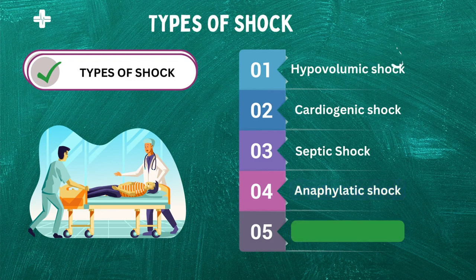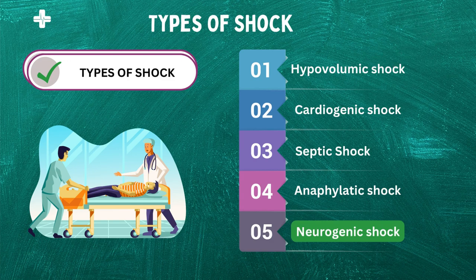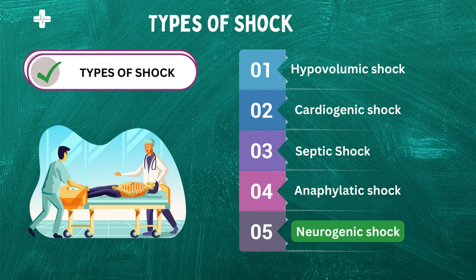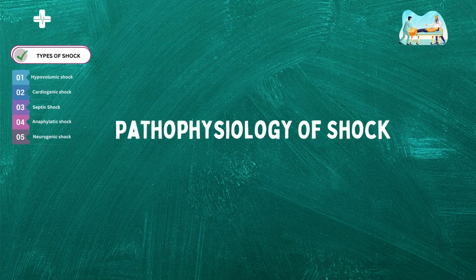Lastly, neurogenic shock. This type of shock occurs when there is damage to the nervous system, such as a spinal cord injury or severe head trauma. The damage to the nervous system can cause blood vessels to dilate, leading to a decrease in blood pressure and inadequate blood flow to the body's organs and tissues. Now let's learn in detail about each type of shock, their causes, and their pathomechanisms.